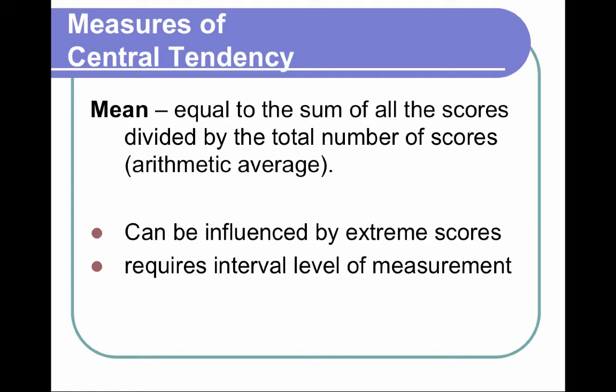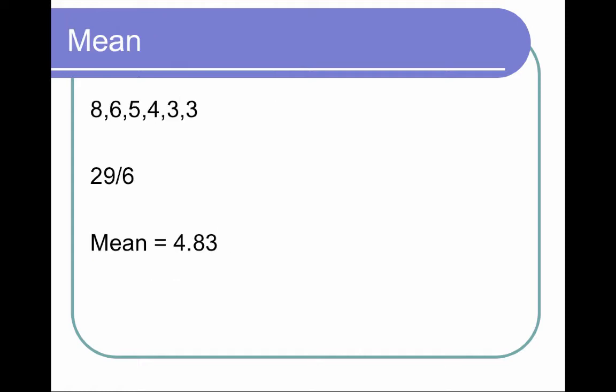When we are talking about a group of data or a specific set of data, you want to be aware that the mean can be influenced by extreme scores. So you want to be careful about looking for outliers in your data set to see what kind of extreme scores may be influencing that mean. And this does require interval level of measurement. Here's an example: add up those numbers, they equal 29, and divide by the total number of numbers, which was 6, and you get the mean of 4.83.